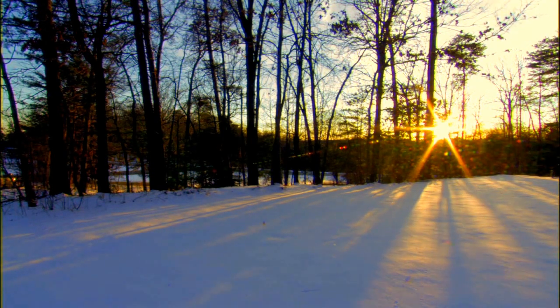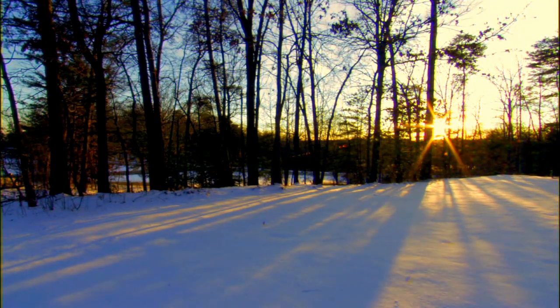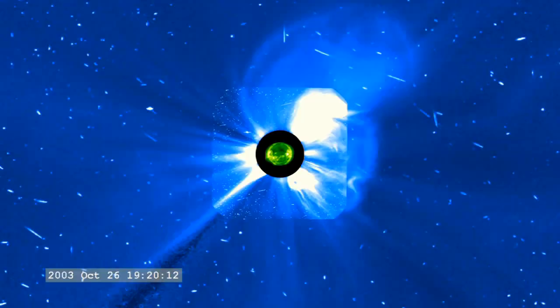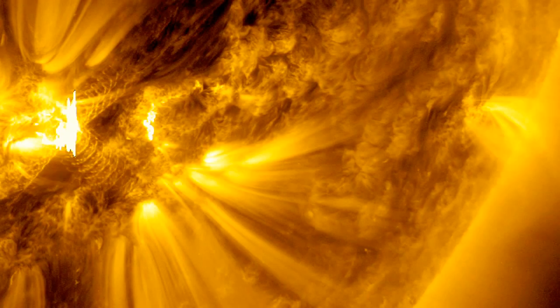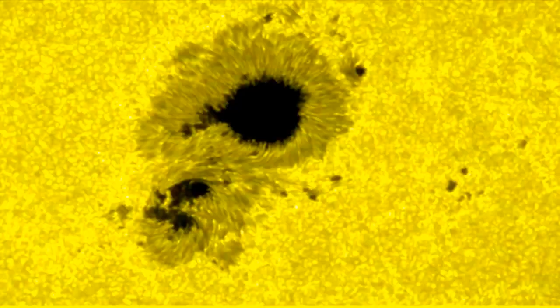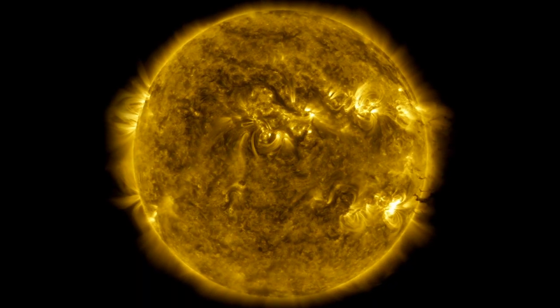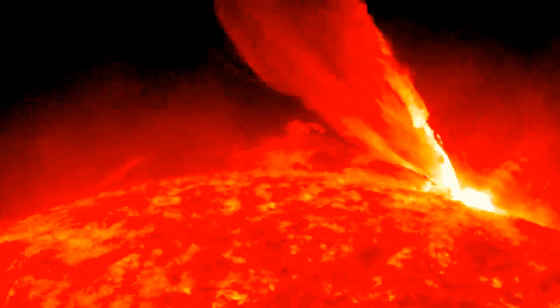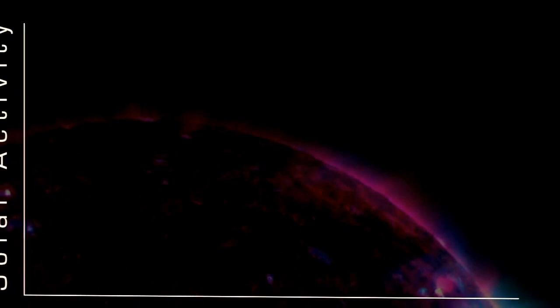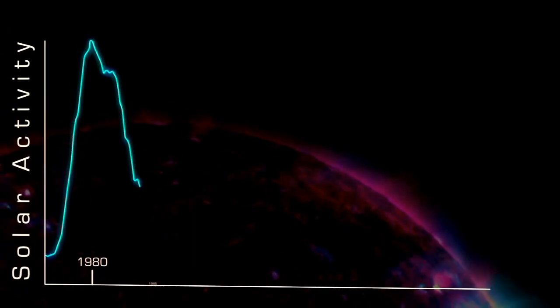When we look up at the Sun from Earth, it seems calm and unchanging. The truth is quite different. In addition to these abrupt changes in activity, the Sun also has a long-term, more regular pattern of change.